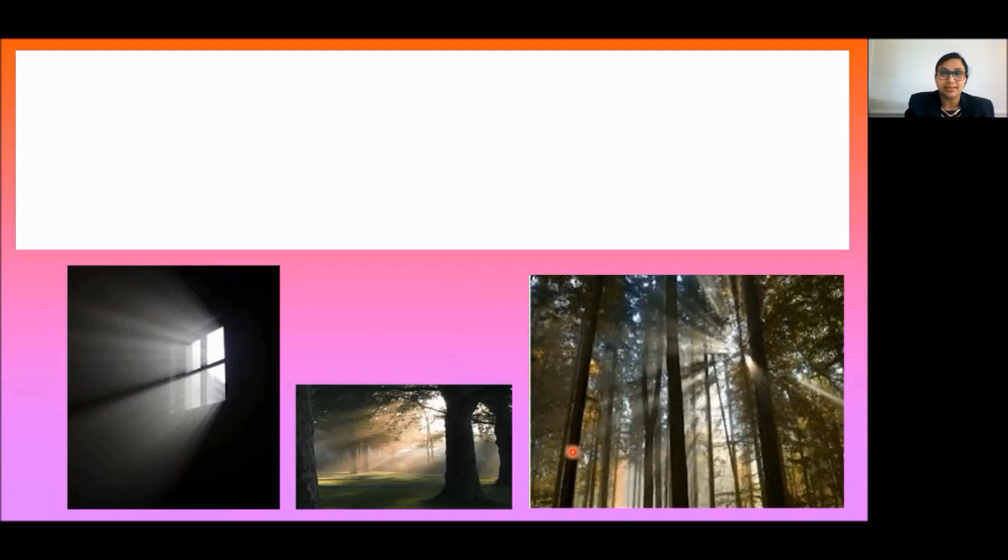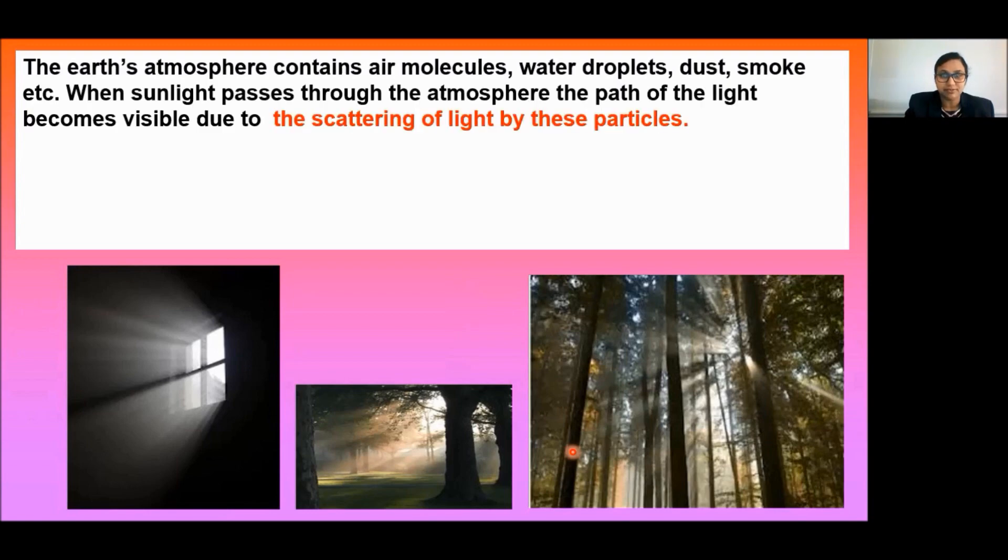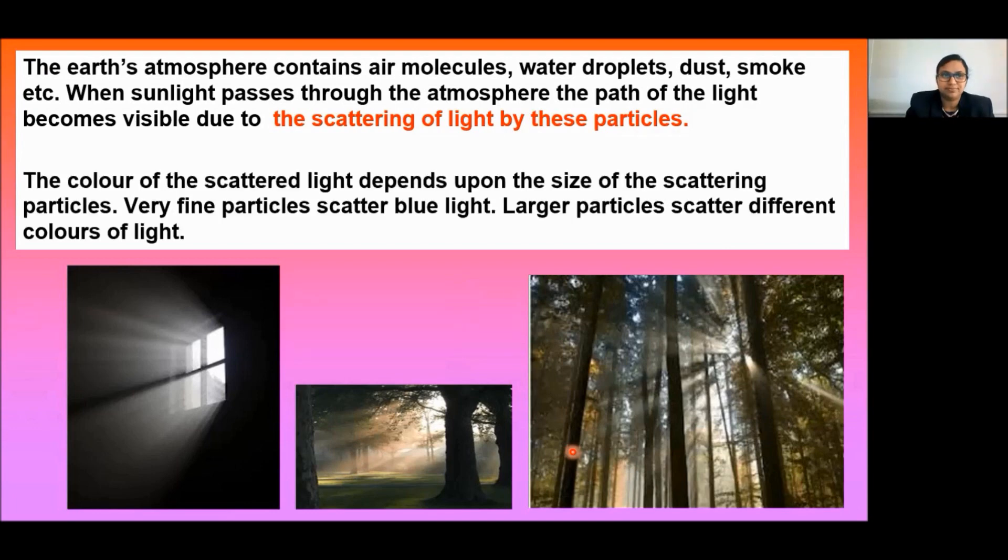We know that the earth's atmosphere consists of dust particles, gas molecules, water vapors, etc. When a beam of light passes through the atmosphere, the path of the light becomes visible due to the scattering of light by these particles. The color of the scattered light depends upon the size of the scattering particles. Very fine particles scatter blue light, larger particles scatter various colors of light.